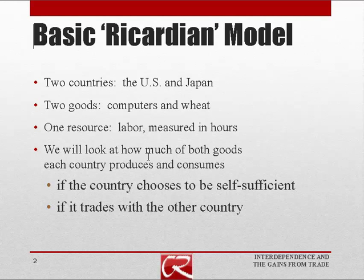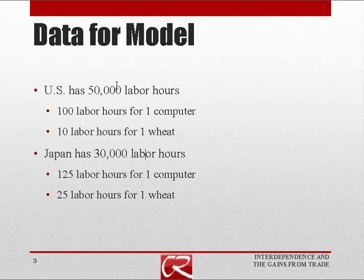First, if the countries choose to be self-sufficient and not trade with each other, and second, if each chooses to trade after specializing. The specific data: the U.S. has 50,000 hours of labor. For every 100 labor hours put into computers, it produces one computer, and for every 10 labor hours put into wheat, it produces one wheat.